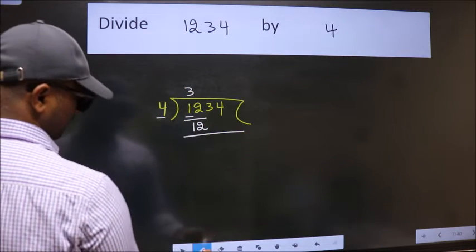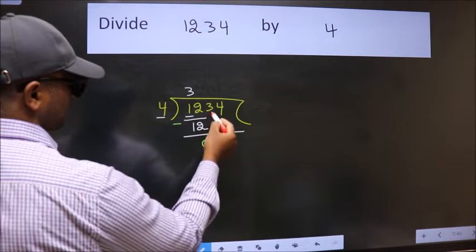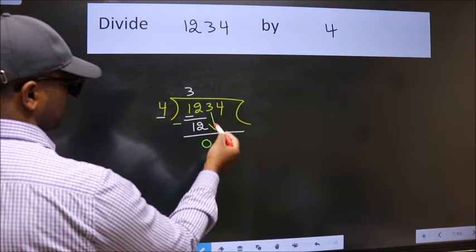Now we should subtract. We get 0. After this, bring down the beside number. So 3 down.